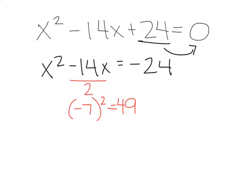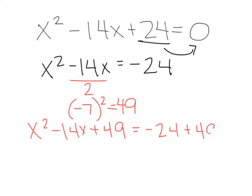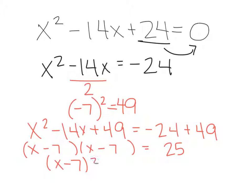This means we have to add 49 to both sides, so I'm going to rewrite my equation: x squared minus 14x plus 49 equals negative 24 plus 49. This ends up equaling 25 on this side, and over here we can factor this equation out to be x minus 7 and x minus 7. To solve for x, this is really x minus 7 squared equals 25.